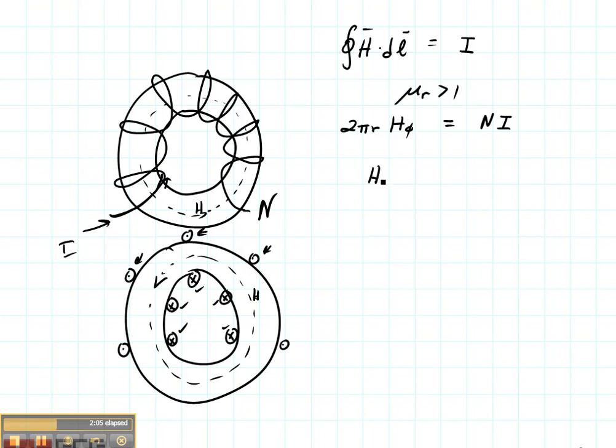So my magnetic field in this toroid is ni over 2 pi r. Now where does the fact that the magnetic permeability is greater than 1 play in here?